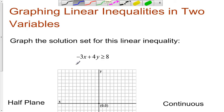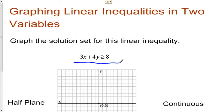Let's have a look. Here is our linear inequality that we wish to graph: negative 3x plus 4y is greater than or equal to 8. What makes this an inequality is this little symbol right here. That is an inequality symbol, greater than or equal to.